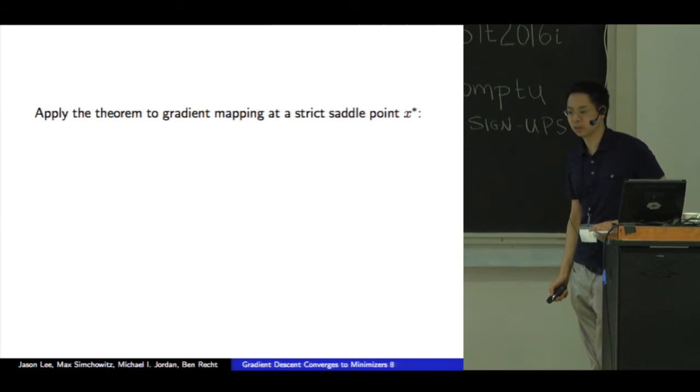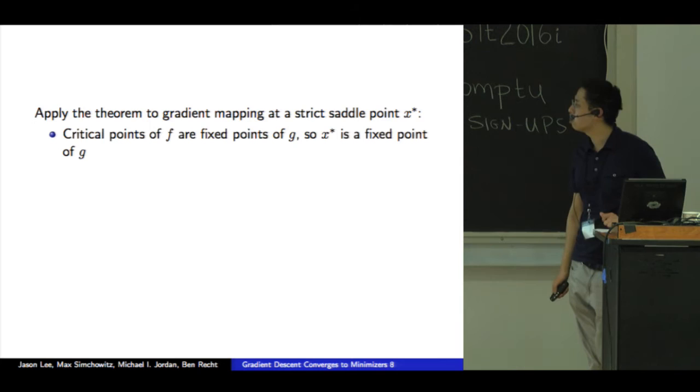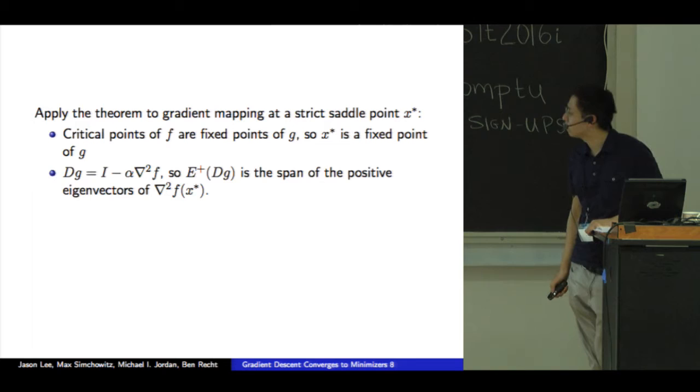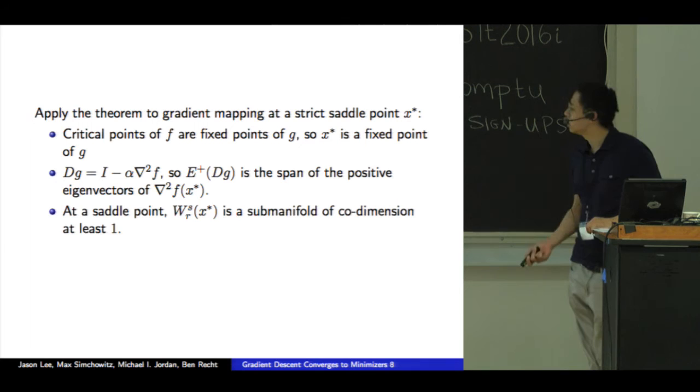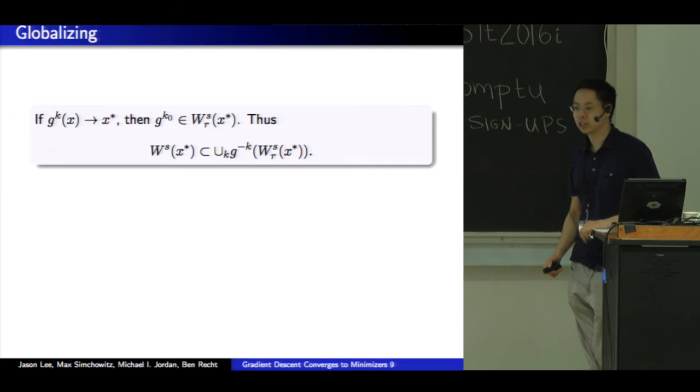So to prove this, it's very simple. We'll simply apply the theorem to a strict saddle point x star. So critical points of a function are fixed points of a mapping g. So x star is a fixed point of the gradient map. Critical points are stationary for the dynamical system. The differential of g, or the Jacobian, is identity minus the step size times the Hessian. And the stable subspace is precisely the span of the positive eigenvectors of the Hessian. At a strict saddle point, the local stable manifold is of co-dimension. It's missing a dimension because it's at most dimension n minus one. So co-dimension at least one.